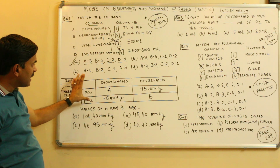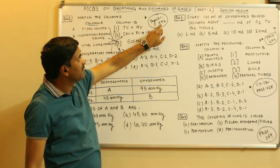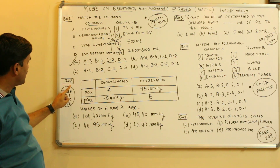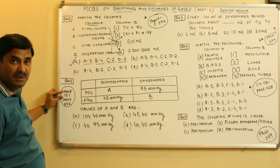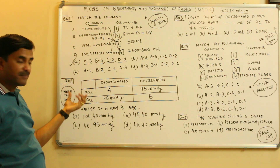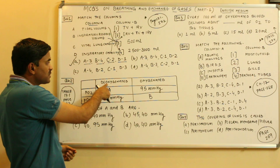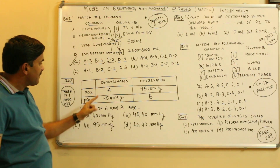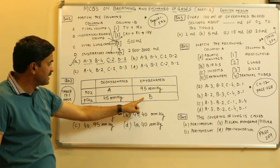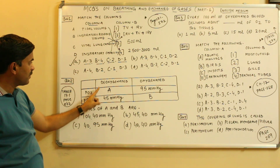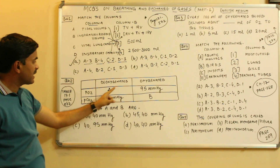Now question number two. A table is given — this question is based on NCERT, present on page number 271–272. There is a table on page number 272, table 17.1 in NCERT. A data is given showing partial pressure of oxygen and partial pressure of carbon dioxide in deoxygenated blood and oxygenated blood. Values of A and B are missing — that is, the partial pressure of oxygen and carbon dioxide of oxygenated blood.